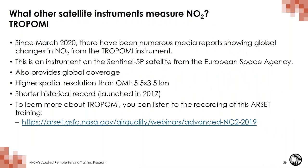TROPOMI is another instrument that measures NO2. TROPOMI was launched on the Sentinel-5P satellite by the European Space Agency. TROPOMI also provides global coverage and higher spatial resolution than OMI. TROPOMI has been making measurements since late 2017, as opposed to 2005 for OMI. This long record from OMI allows us to place results we see today in context of a much longer historical record.